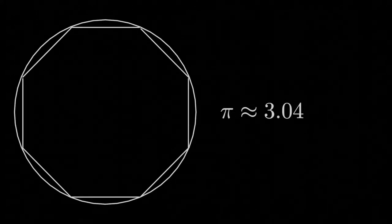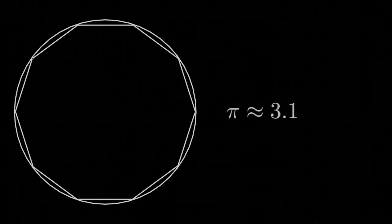We see that as we use polygons with more and more sides, our approximation of pi gets better and better, as the theory behind approximating the circumference goes.